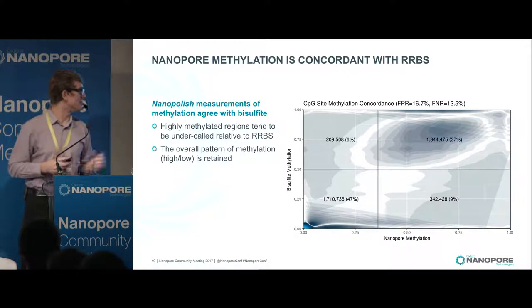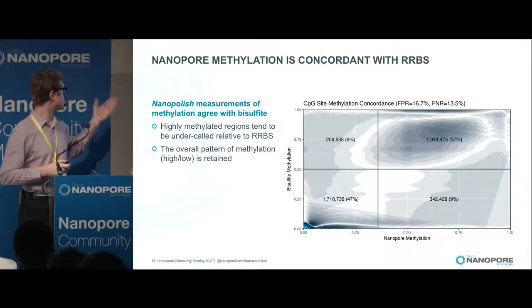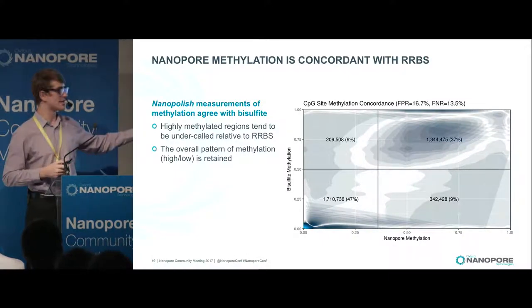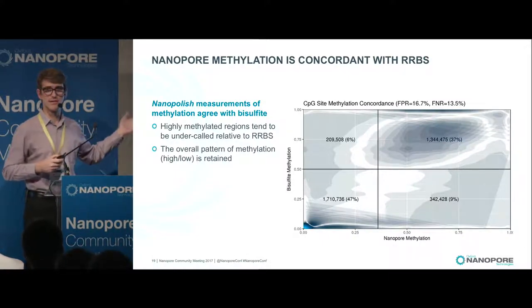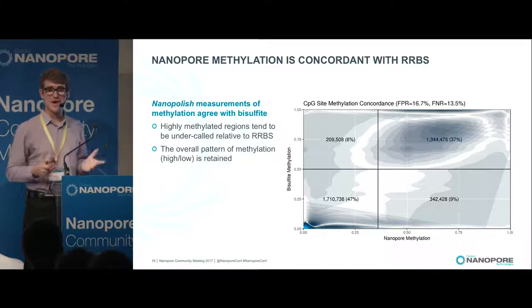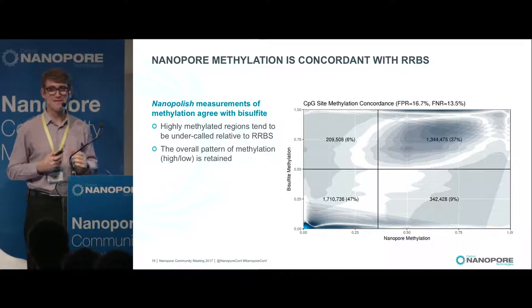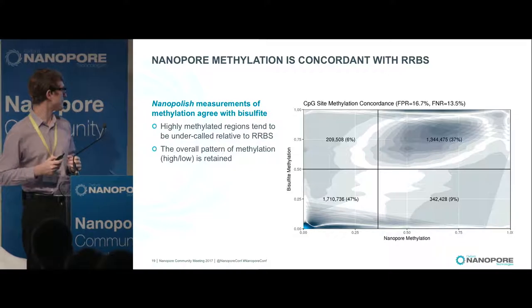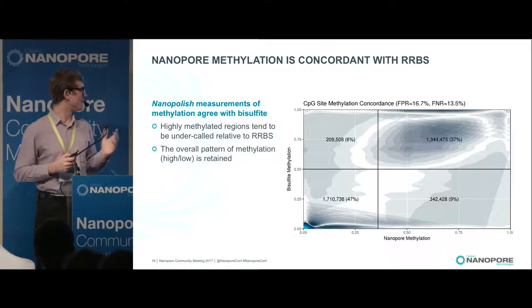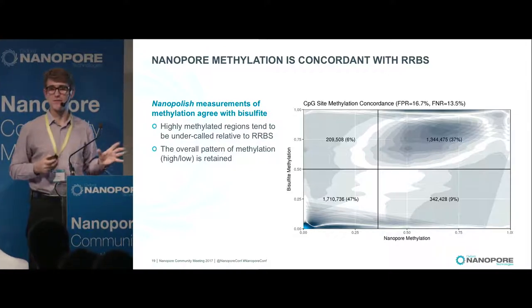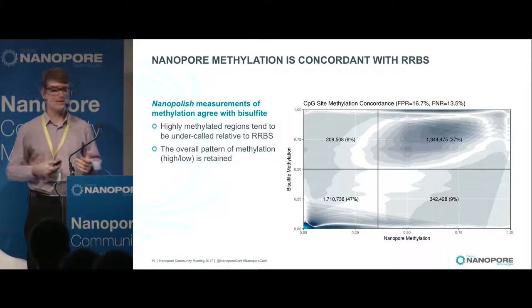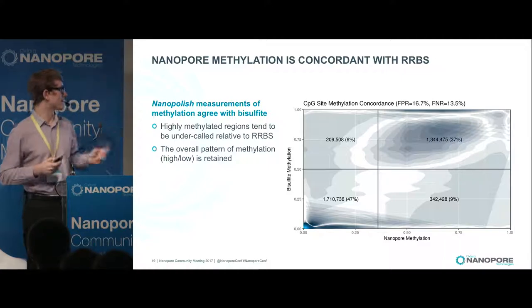Very briefly, comparing RRBS and nanopore methylation — they agree. I won't dwell on that since others have discussed it. Nanopore does tend to undercall highly methylated regions, but the binary classification is still pretty good.